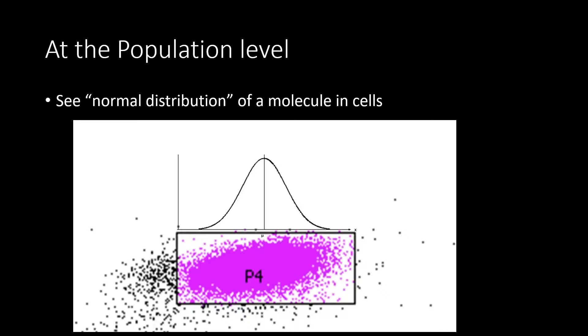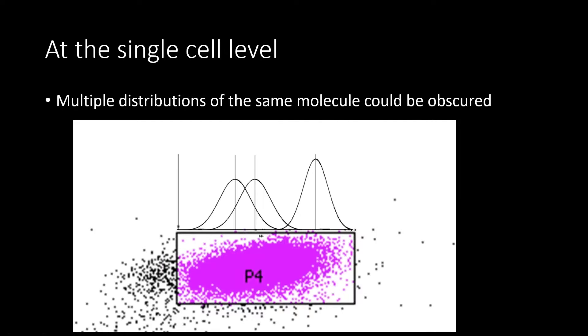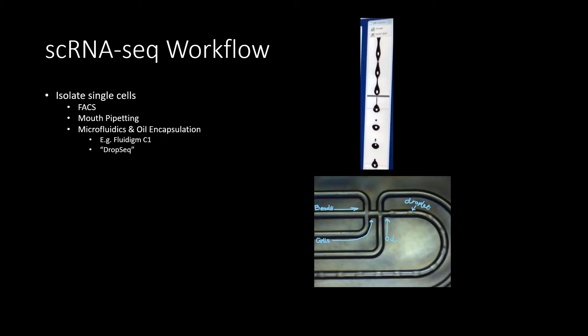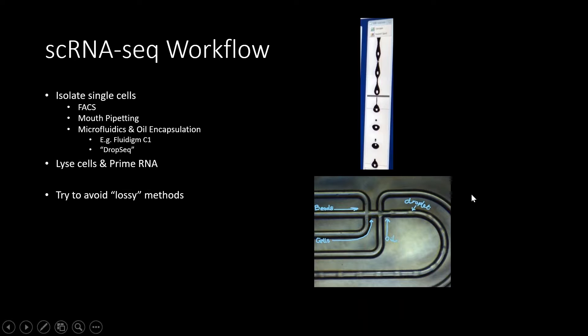To try and untangle some of the biological and technical noise, let's go over the single-cell RNA-seq workflow. The first step is isolating single cells — that can be with FACS, or for higher throughput, using microfluidics and oil encapsulation. Then it's lysing the cells and priming the RNA for first and second strand synthesis. One of the big differences from tissue RNA sequencing is trying to avoid lossy steps in the protocol. We reverse transcribe the RNA — in our lab we use SmartSeq — then fragment and tag the RNA using Nextera.